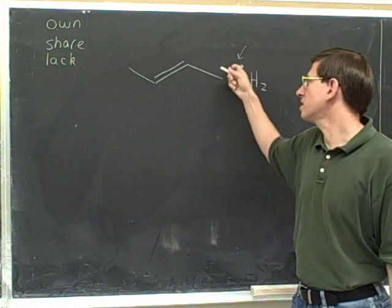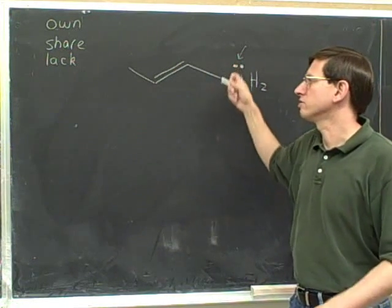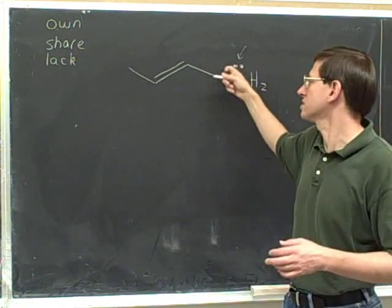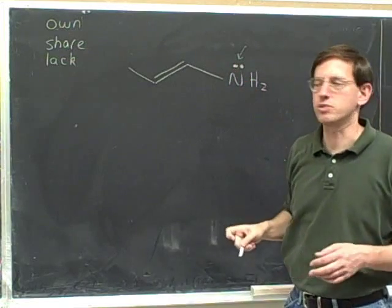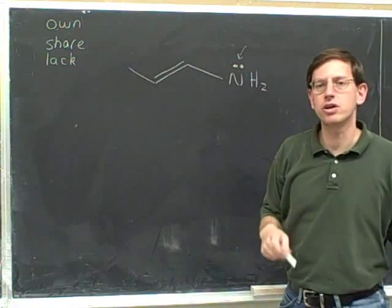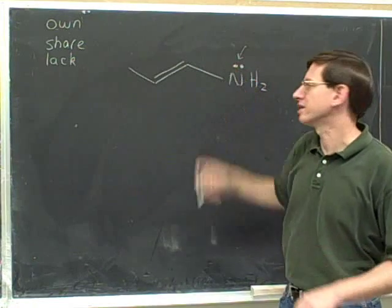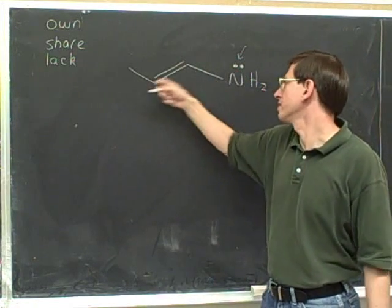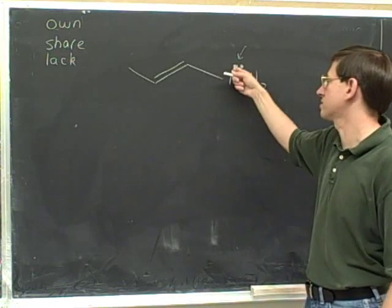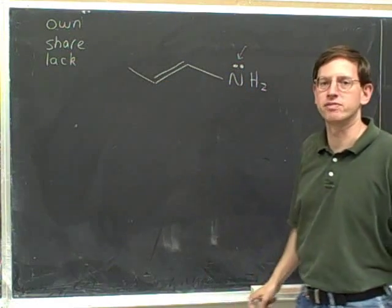What's the relationship between this carbon and the lone pair? This carbon completely lacks the lone pair — it does not have any possession of it. That doesn't mean the carbon has no electrons of its own; it just means it lacks this particular pair. The other carbon also lacks the lone pair. So the nitrogen owns this pair, and both carbons lack it.